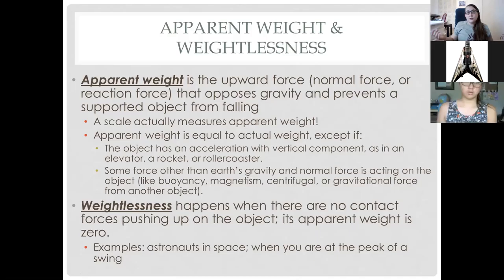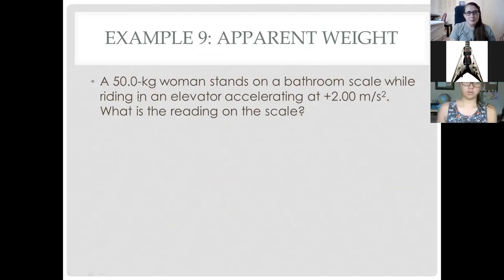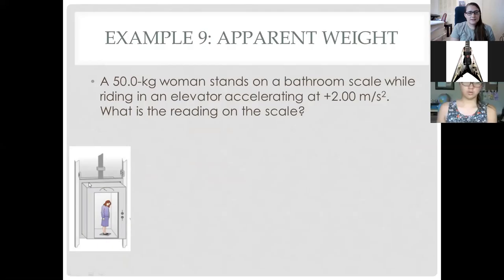The vomit comet astronaut training flights work on this same principle. They take you up very high in a plane with a big open interior, then go into a steep drop. Since both you and the plane are falling at the same rate, there are no contact forces acting on you and you feel weightless — just like in space. They use this to train astronauts periodically.